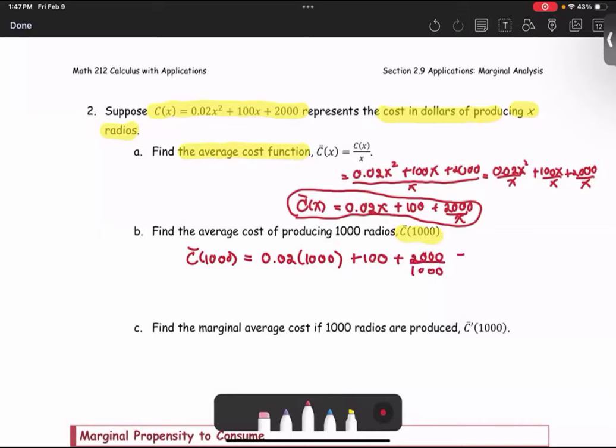Simplifying, the first term gives us 20. The second term remains as 100. The last term is 2. Therefore, we get 122 as the average cost per item after producing 1000 items.